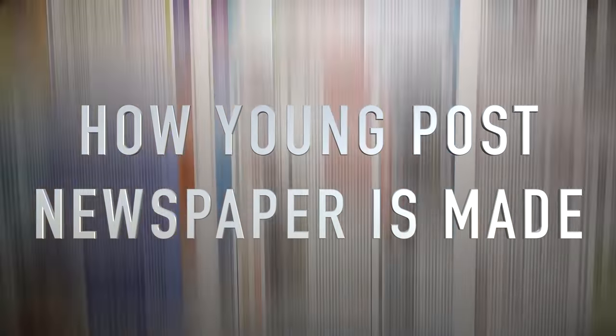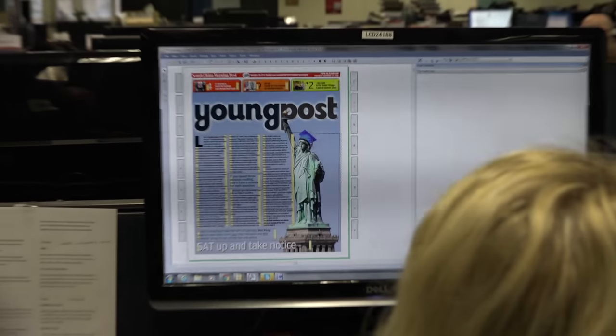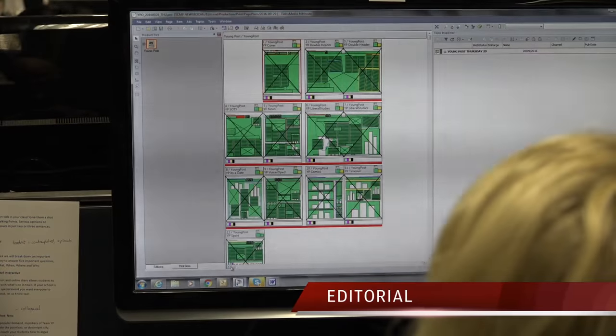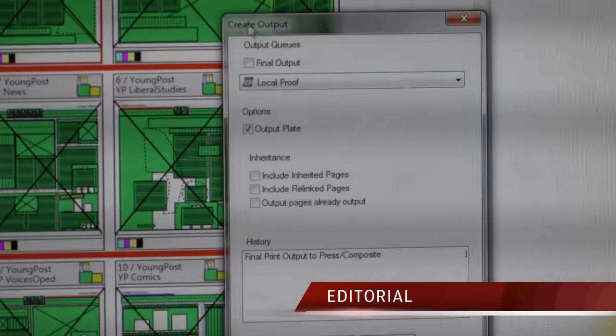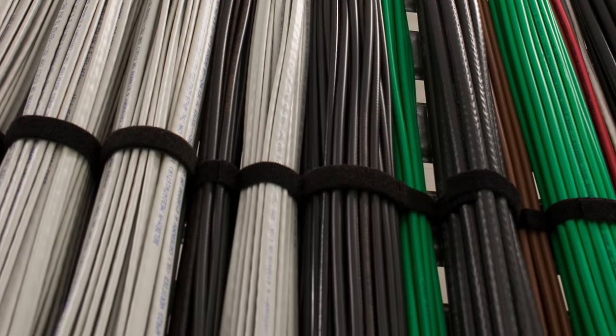Ever wonder how a young post newspaper is made? A sub-editor checks each story, that the facts are correct, that all the spelling and grammar is right, before forwarding the page to the production department.